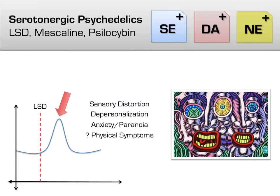The effects of serotonergic psychedelics such as LSD are primarily focused on sensory abnormalities as well as perceptual distortions such as depersonalization. Occasionally, use of LSD can result in significant symptoms of anxiety and paranoia, known colloquially as a bad trip. Many of these serotonergic psychedelics affect dopamine and norepinephrine as well, which accounts for some physiological effects such as pupillary dilation, hypertension, and tachycardia — though these effects are inconsistent and unreliable from a clinical standpoint and therefore unlikely to be tested.